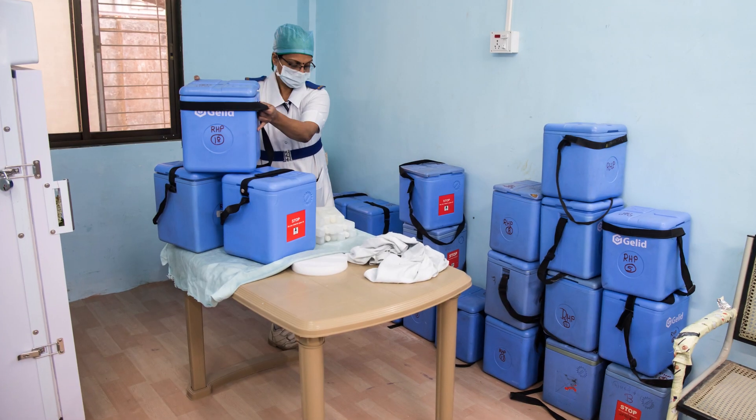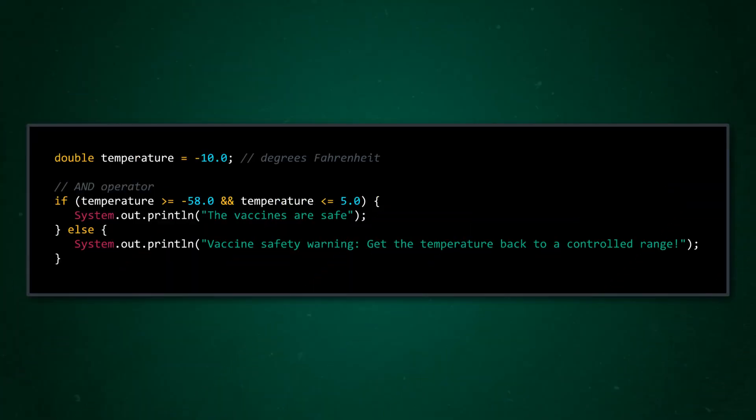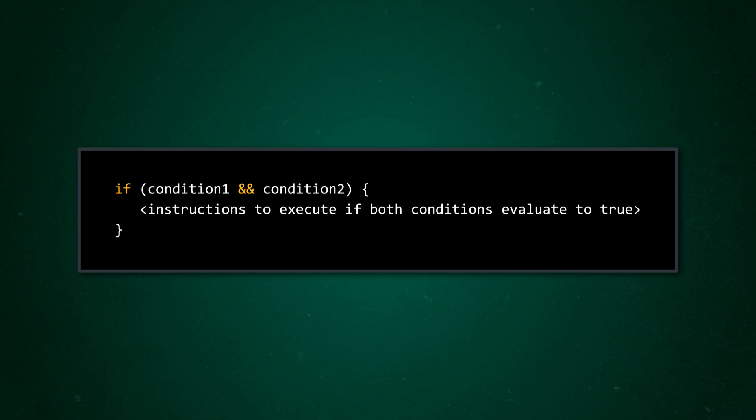And we can adjust our temperature program again to see these new operators in action. Let's say a medical office wants to use our thermometer program to safely store vaccines. These vaccines have to be stored at a temperature between negative 58 degrees and 5 degrees Fahrenheit, or else they might stop working. The conditional statement for this situation is similar to our last example, except that we'll use a compound condition instead. For our problem, we'll make sure that the temperature is greater than or equal to negative 58 degrees. Then, we'll use the logical AND to connect that to another condition that says that it's also less than or equal to 5 degrees. If both parts of the condition evaluate to true, the vaccines are safe. Otherwise, we'll issue a warning in the else block. Again, under the hood, Java is checking each of these conditions as either true or false. Then, the logical AND checks that both conditions are true. If one or both are false, we skip that block of code and move on.